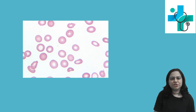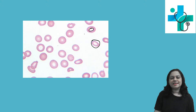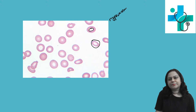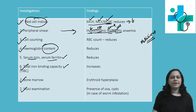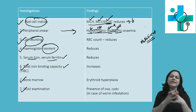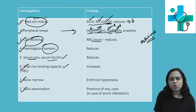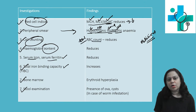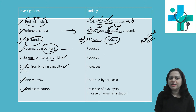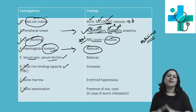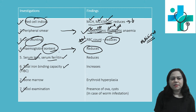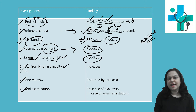Looking at this peripheral smear image carefully, you will find cells that are smaller in size and hypochromic. Regarding cell counting, anemia itself indicates that RBC count will be less — total RBC count will be reduced. Hemoglobin content goes without saying that it will also be reduced. This is hypochromic microcytic anemia.